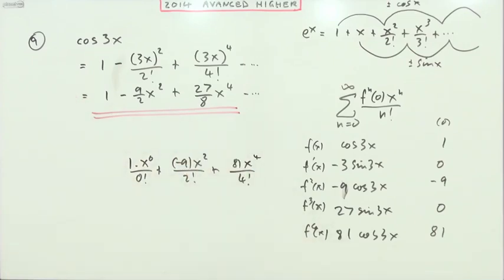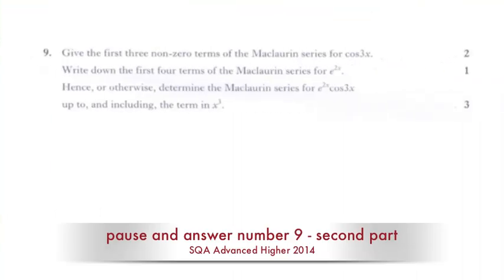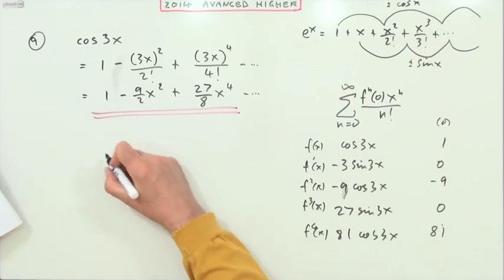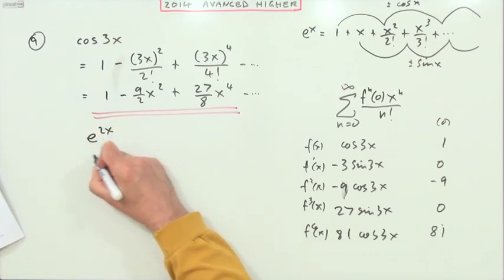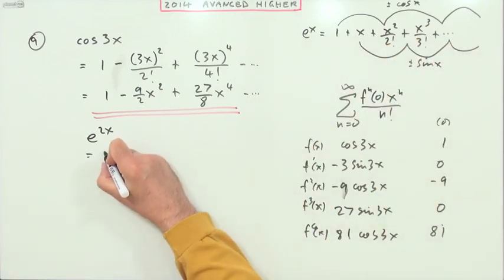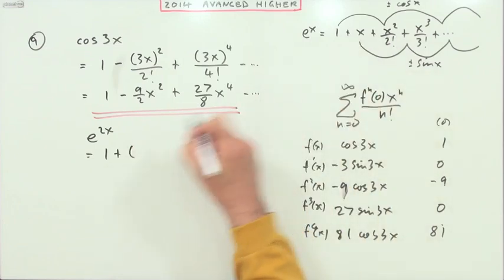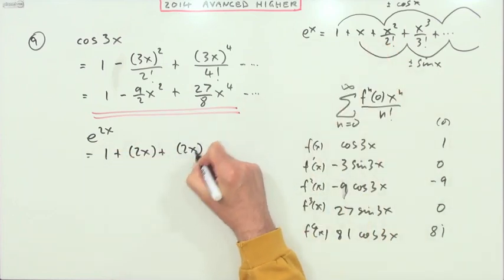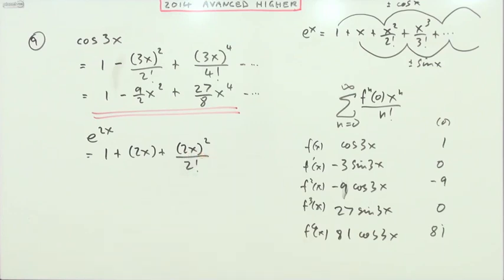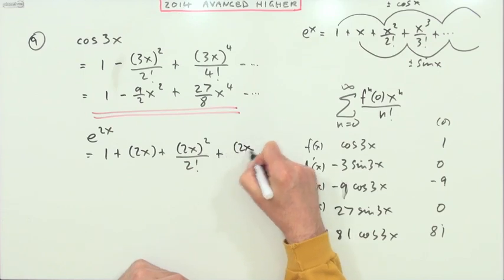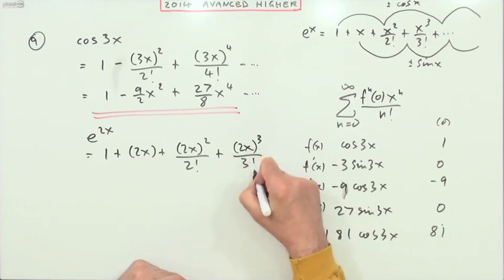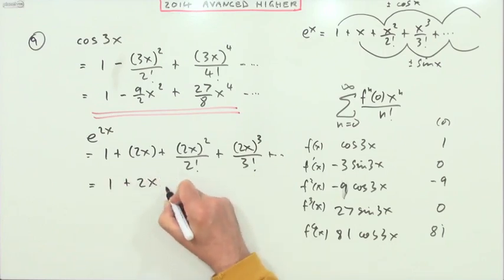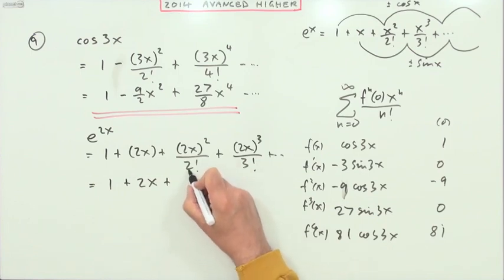So when it says just write down the first four terms of e^(2x), well it's the same thing here. That will be 1 + but instead of x I'm putting a 2x, + instead of x I'm putting a 2x but that'll be squared divided by 2!, + (2x)³/3!.